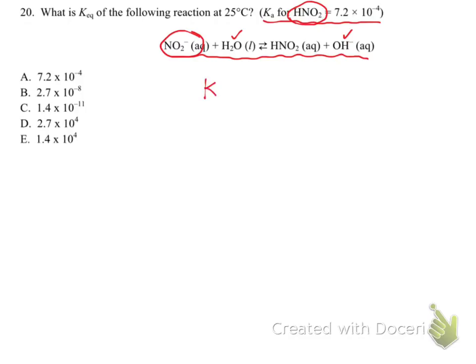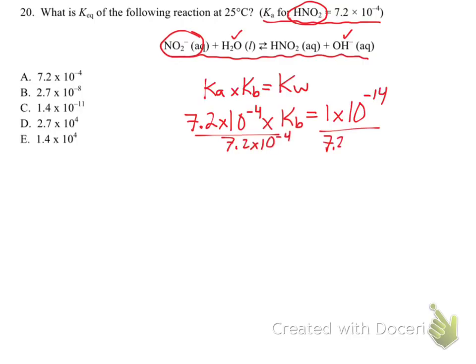So we're going to use KA times KB equals Kw. So our KA for nitrous acid is 7.2 times 10 to the negative fourth times the KB that we're trying to solve for equals Kw at 25 degrees Celsius, 1 times 10 to the negative 14th. And then solving, dividing both sides by 7.2 times 10 to the negative fourth, we'll end up getting the KB of nitrite which ends up being 1.4 times 10 to the negative 11th. And since this is the KB reaction, that means that KB is indeed our KEQ.